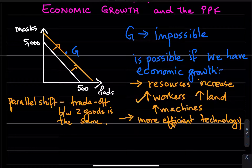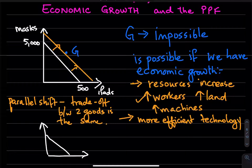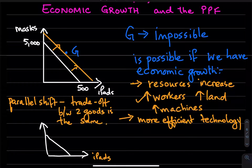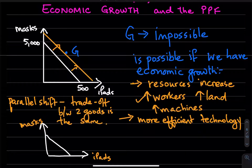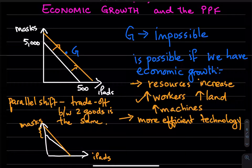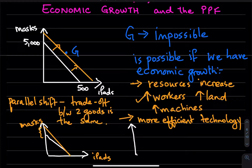In practice, this is not what typically happens. If we're talking about iPads and masks, and we get a technology that is more efficient in mask production, the production possibilities frontier will not shift parallelly outward. Instead, it would shift such that we are producing more masks but not much has changed in iPad production.